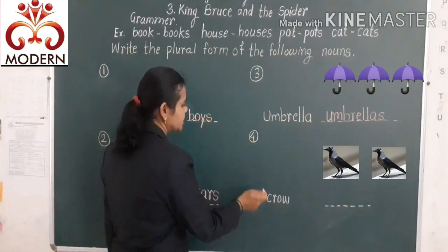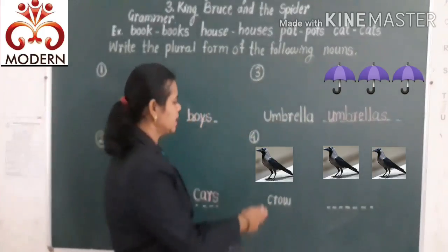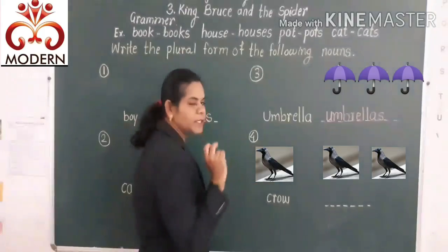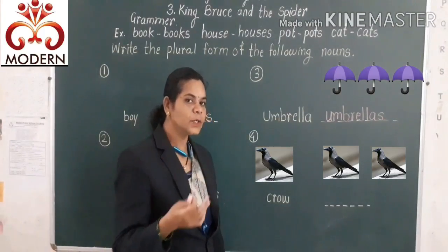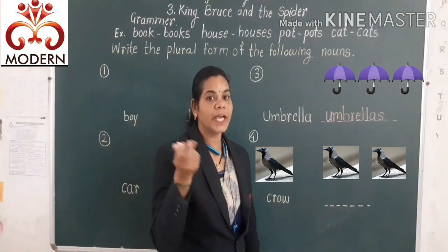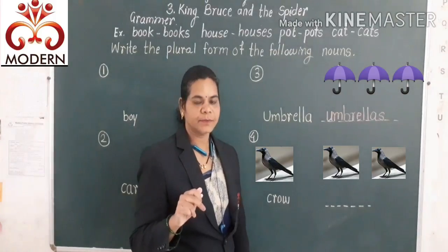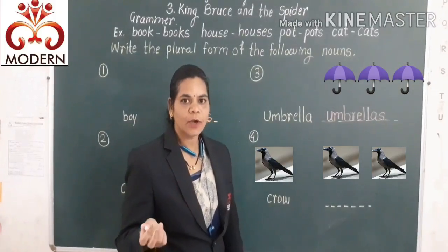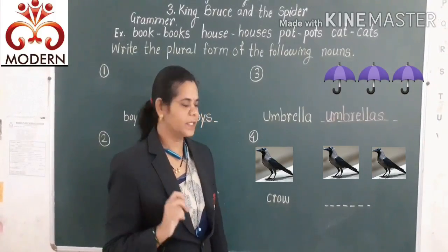The next example is 'crow.' Here, given one crow. But when more than one crow, we add 's' to the common noun or naming word — crows.